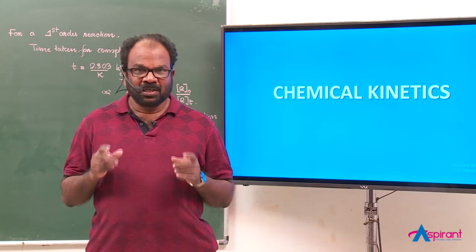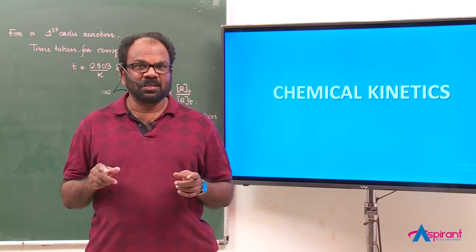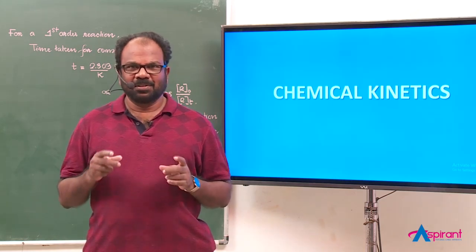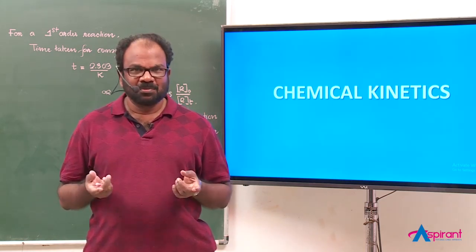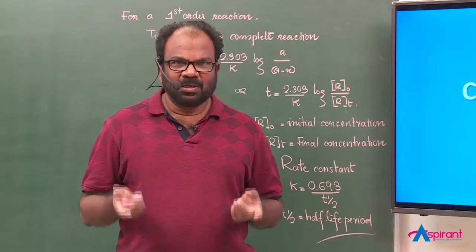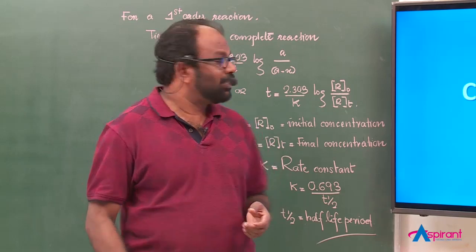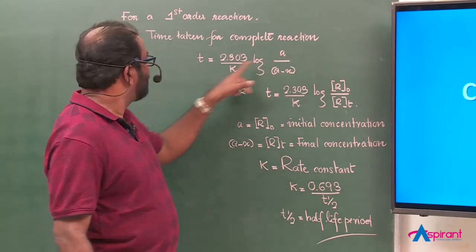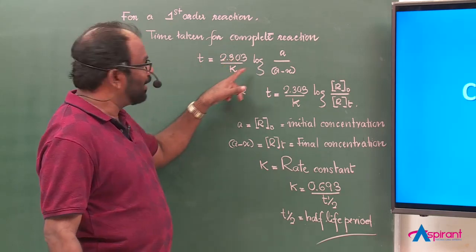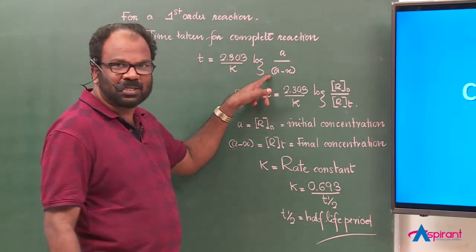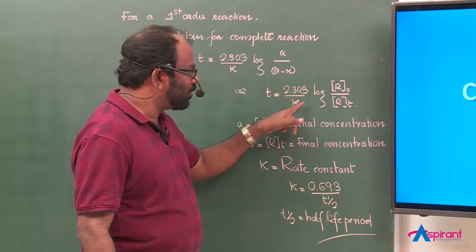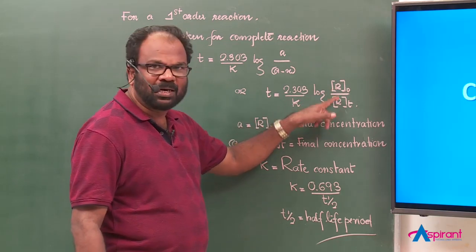First order reaction is an important example of radioactivity, which is also taught in physics. For a first order reaction or radioactivity, the time taken for complete reaction: T equals 2.303 divided by K, into log A divided by (A minus X). In the NCERT book, this is written as T equals 2.303 divided by K, into log R₀ divided by Rₜ.